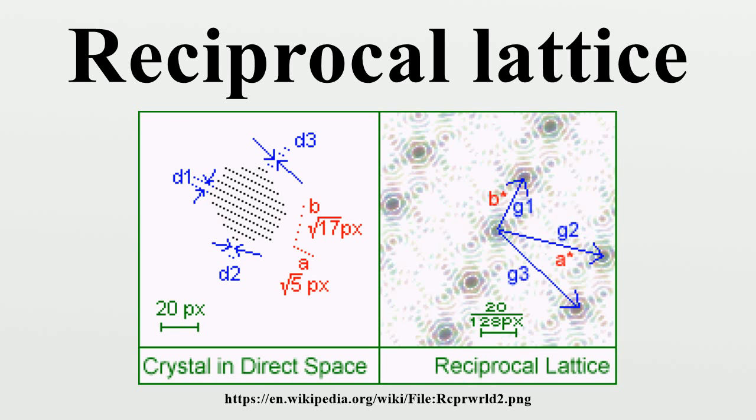The dual lattice is then defined by all points in the linear span of the original lattice with the property that an integer results from the inner product with all elements of the original lattice. It follows that the dual of the dual lattice is the original lattice.